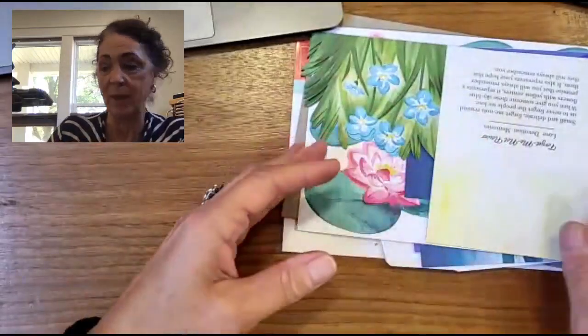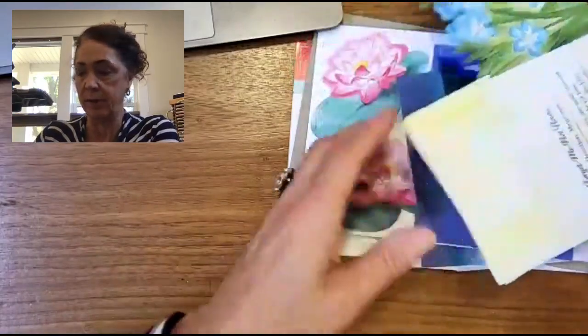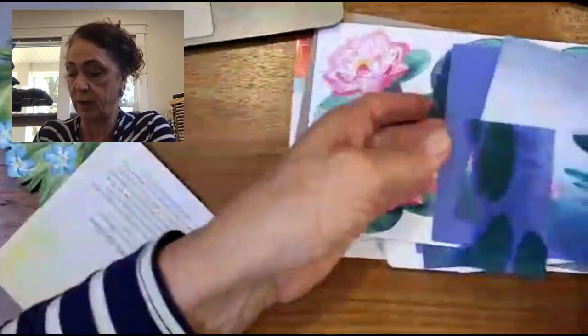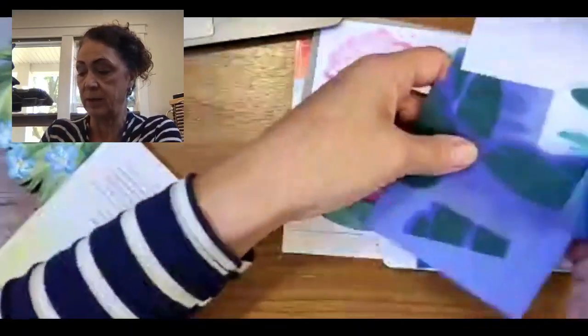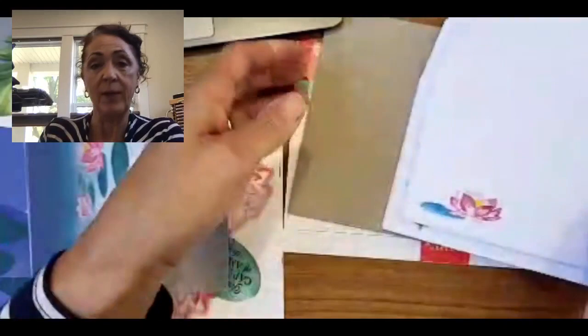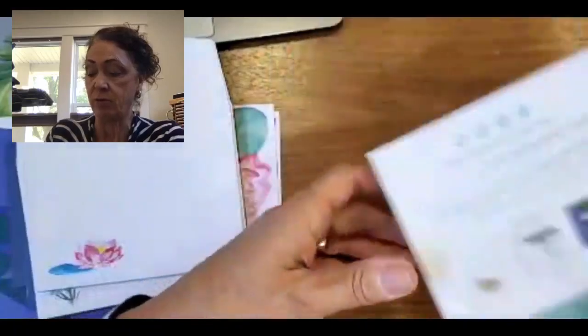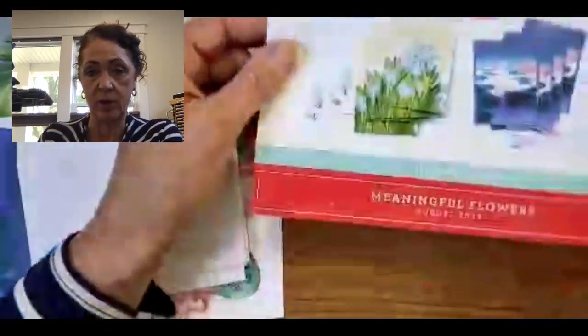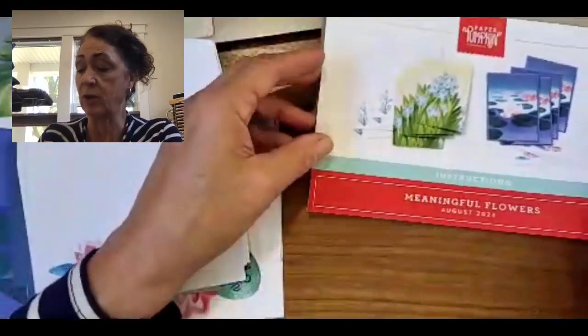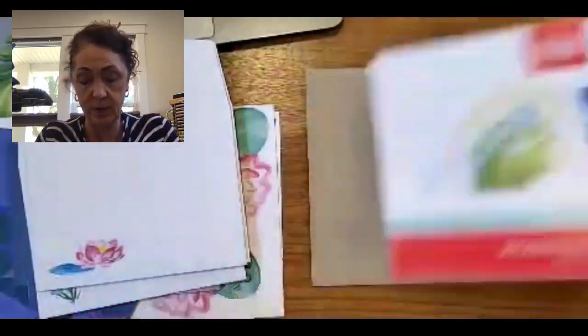This set is called meaningful flowers because it has forget me nots. So this is the one card base. Forget me nots, and then we have lotus flowers, some vellum, some pieces. Then we have some pretty envelopes. So you right away know you're getting happy mail when you have a flower on your envelope. And then at the very bottom, underneath this piece of chipboard, that is where you're going to find your instructions.